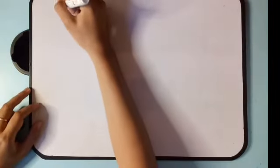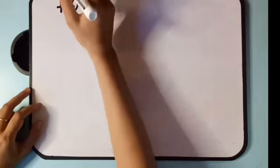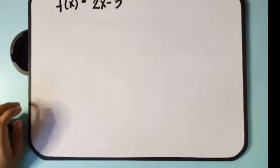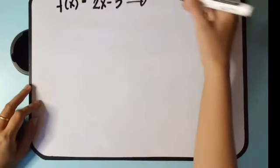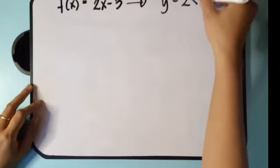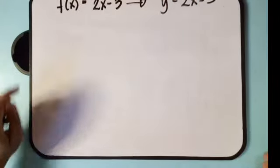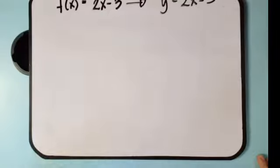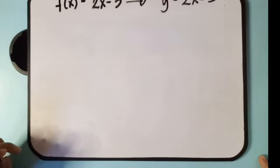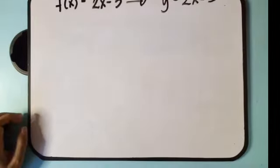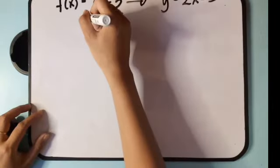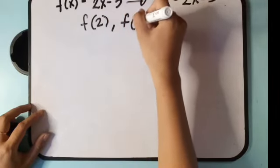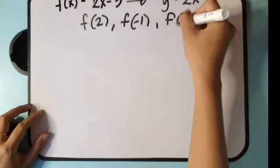Let's say we have the given function f of x is equal to 2x minus 3. We can also express this using the mathematical equation y is equal to 2x minus 3. But since we are talking about function, we change the y into f of x. So f of x is equal to 2x minus 3, and we will evaluate f of 2, f of negative 1, and f of 5.